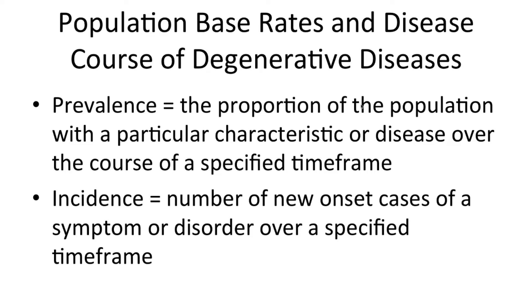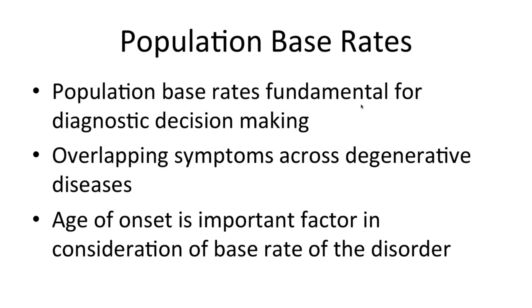Moving to population base rates and disease course of degenerative diseases, we must talk about prevalence and incidence. Prevalence is the proportion of the population, usually estimated through sampling, with a particular characteristic or disease over a specified timeframe. Incidence is the number of new onset cases of a symptom or disorder over a specified timeframe. Population base rates are critical for diagnostic decision-making, as many presenting symptoms can overlap across diseases. Age is one differentiating factor, as are base rates, since the vast majority of neurodegenerative diseases have onset later in life. Some diseases are more common than others, and the course of neurodegenerative diseases varies across subtypes, which can be quite helpful for differential diagnosis.